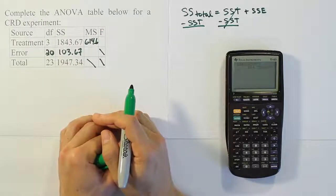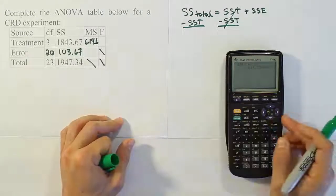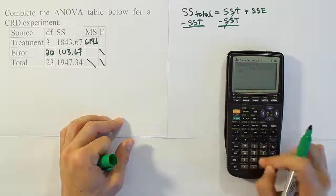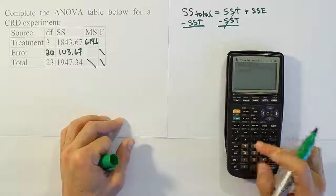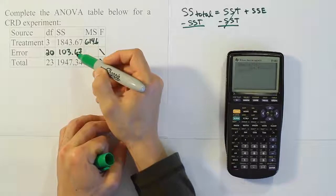But it's 614.556 repeating. Okay, now after that, we're going to take our 103.67. This is our SSE, and we're going to divide it by its degrees of freedom, which is 20.